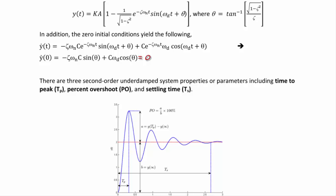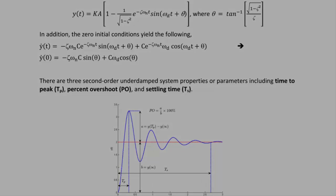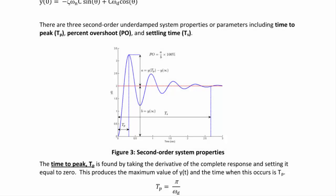There are three second order underdamped system properties: time to peak, percent overshoot, and settling time. The time to peak is found by taking the derivative of the complete response and setting it equal to zero. This produces the time of maximum value, tp = π/ωd.